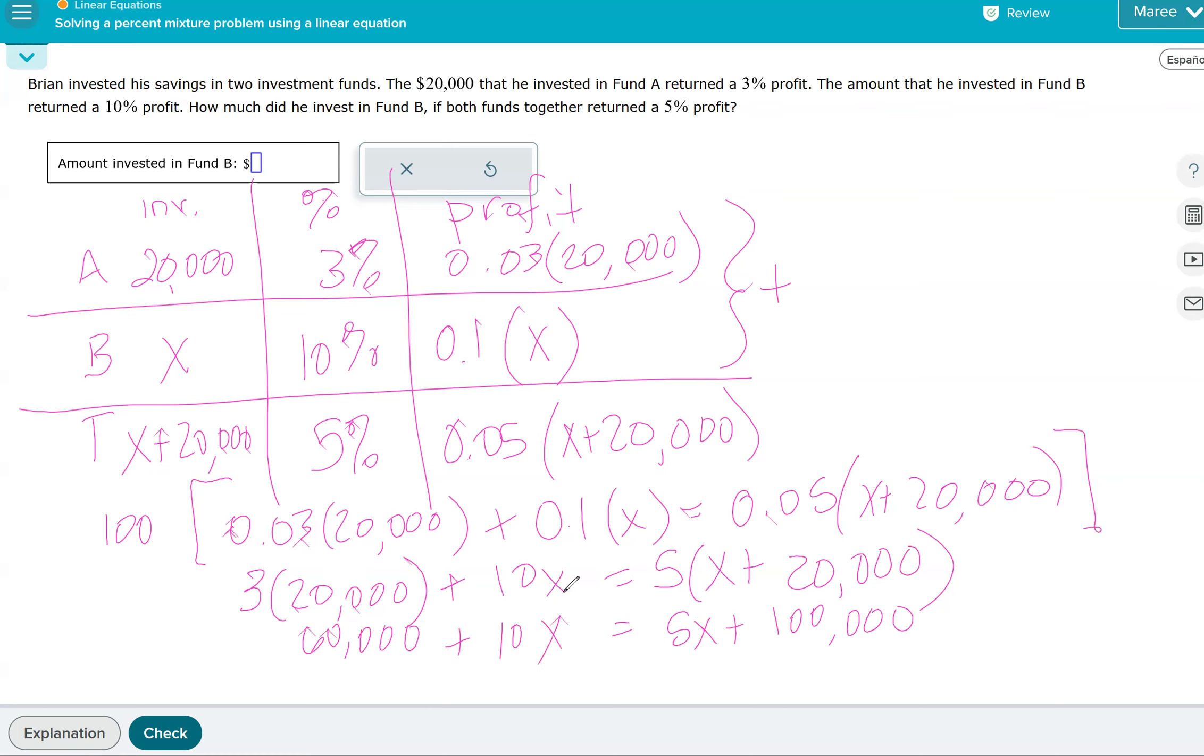So what I'm going to do is I'm going to subtract 5X and then I'm going to subtract 60,000. So I'm doing two steps in one. Normally we do one of those at a time. These will cancel and this will cancel. So we're left with 10X minus 5X, which is 5X. And then we're left with 100,000 minus 60,000, which is 40,000. And then we divide both sides by 5 to get 8,000. So the amount that was invested in fund B is $8,000.